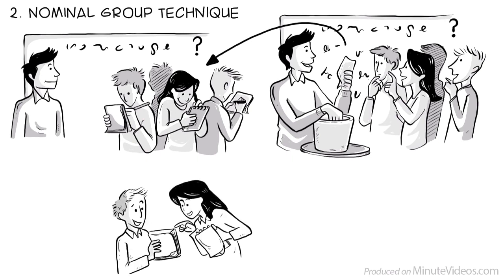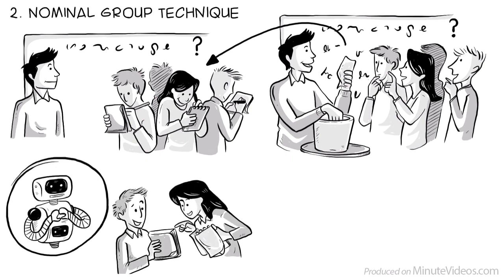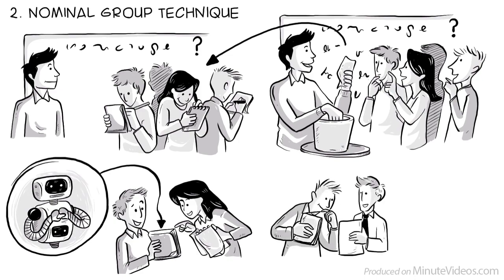For example, one group may brainstorm on the form of a product, while the other focuses on the technical features.